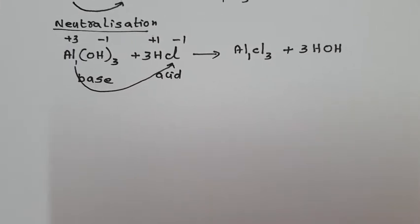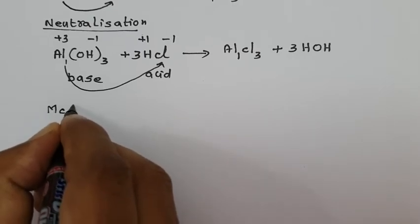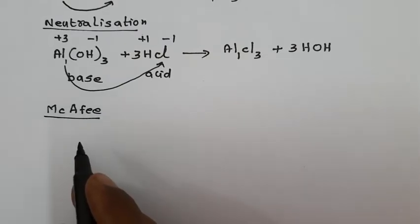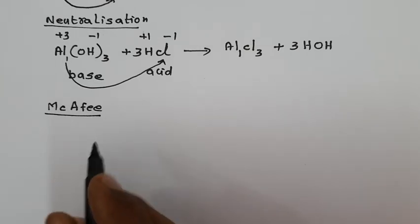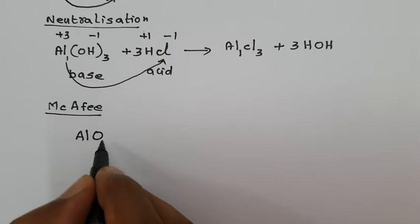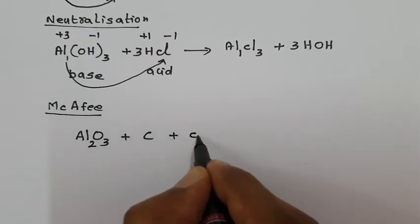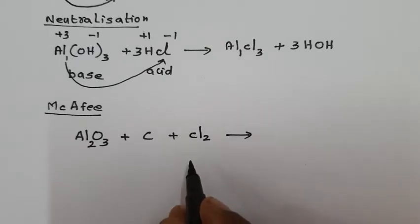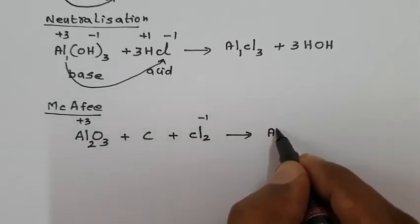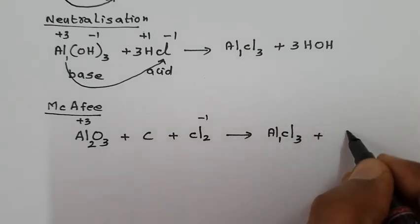The third method is the McAfee process — the same naming reaction used in the preparation of Boron Trifluoride. Aluminium oxide (Al₂O₃, aluminium valency 3, oxygen valency 2) is treated with coke (carbon) and Chlorine (Cl₂). Aluminium 3+ combines with Cl⁻ to form AlCl₃, and carbon removes all oxygen as Carbon Monoxide (CO).